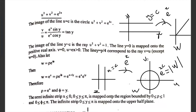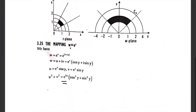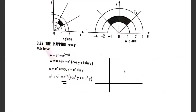Next, the image of y = c under this mapping. Putting y = c, we get w = u + iv = e^x · (cos c + i sin c). Here cos c + i sin c is a particular complex number — for example, if c = 1, then w = e^x · (cos 1 + i sin 1), which is a specific point in the w-plane.